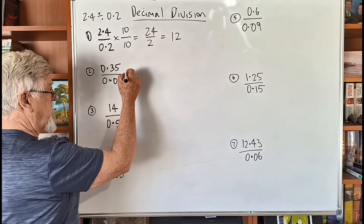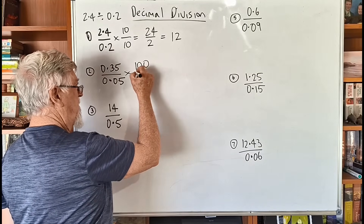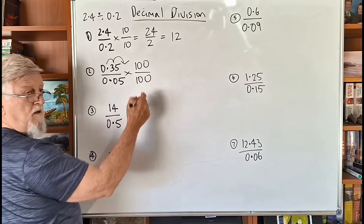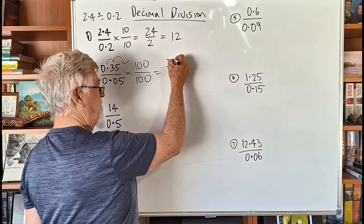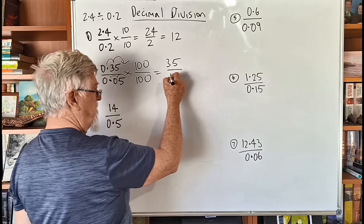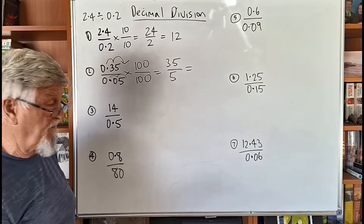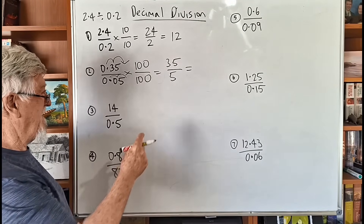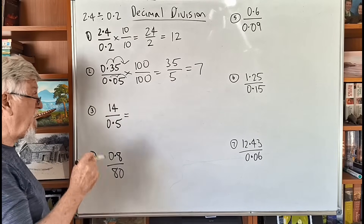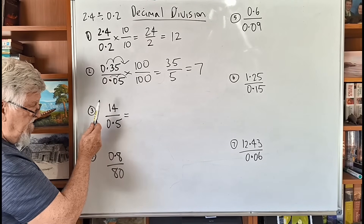Next one — these have two decimal places each and we want no decimals, so instead of multiplying by 10 I'm going to multiply by 100 on both top and bottom. The two zeros means the decimal moves twice, so the top becomes 35 and the bottom becomes 5. That gives 35 over 5, which equals 7.